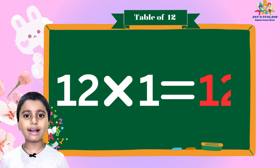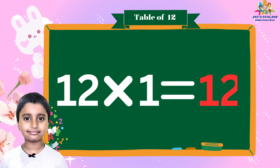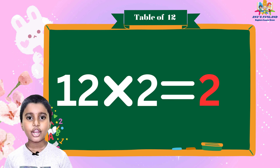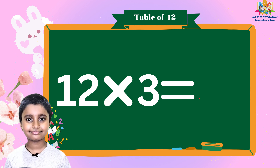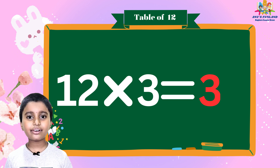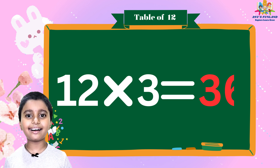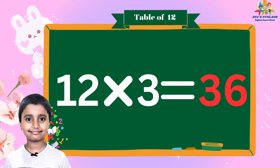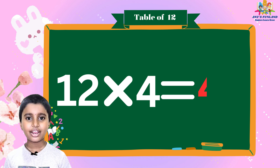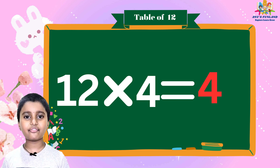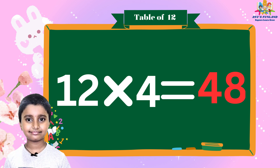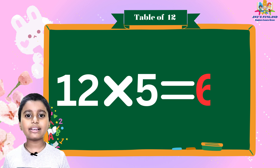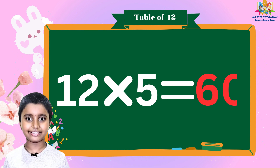Twelve ones are twelve. Twelve twos are twenty-four. Twelve threes are thirty-six. Twelve fours are forty-eight. Twelve fives are sixty.